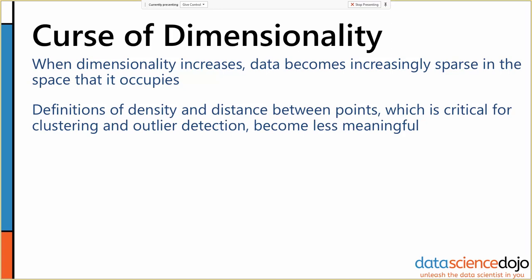In a lot of contexts, for a lot of different algorithms, definitions of density and distances between points of similarity and dissimilarity are really important to things like clustering methods and outlier detection, anomaly detection, and this all becomes less meaningful. If you add enough dimensions, every point looks like an outlier.